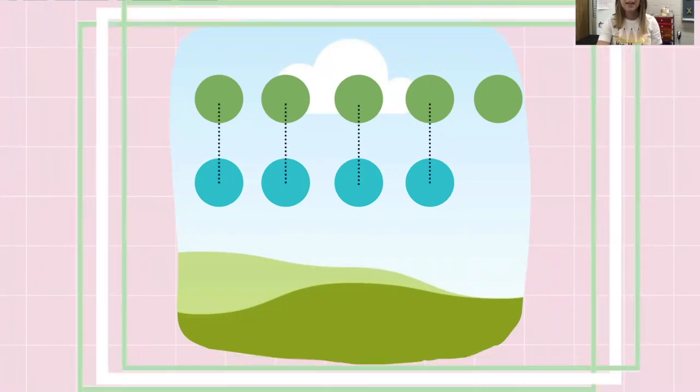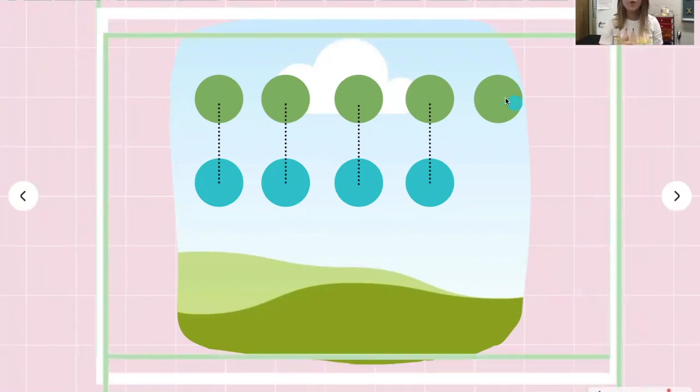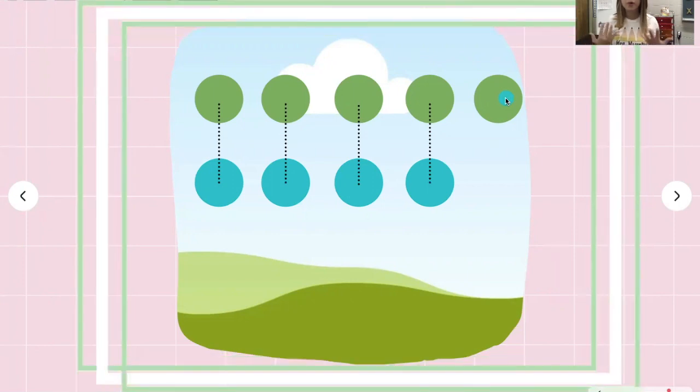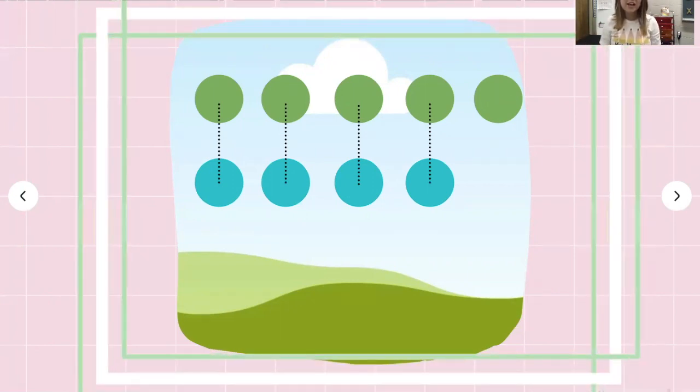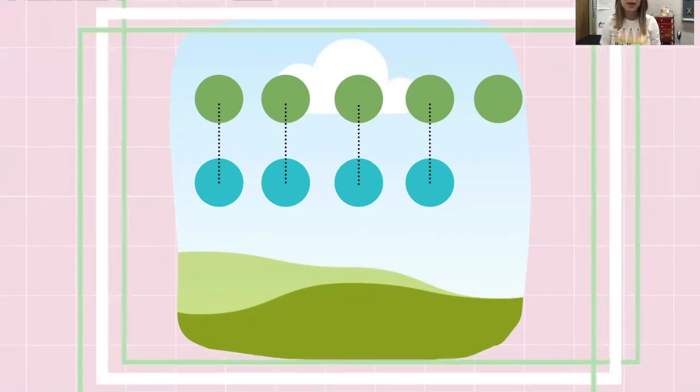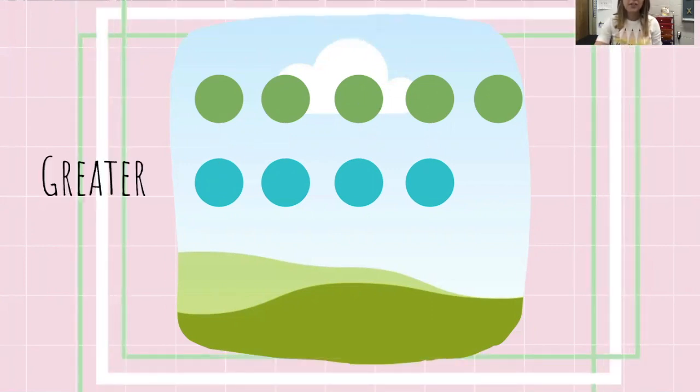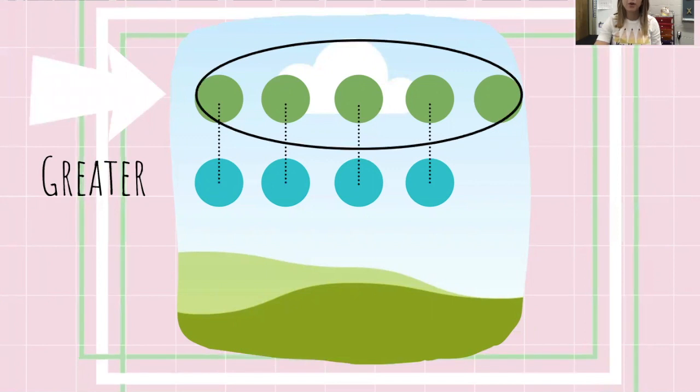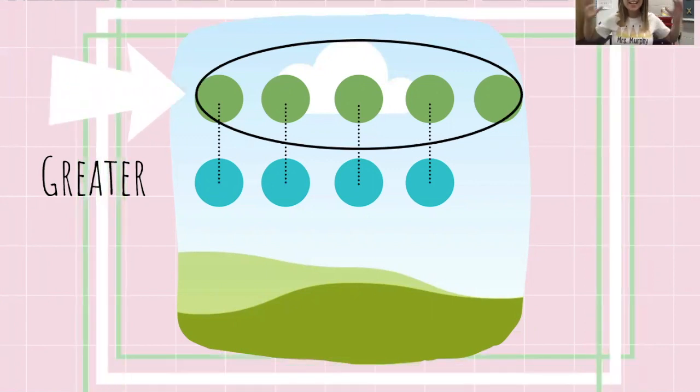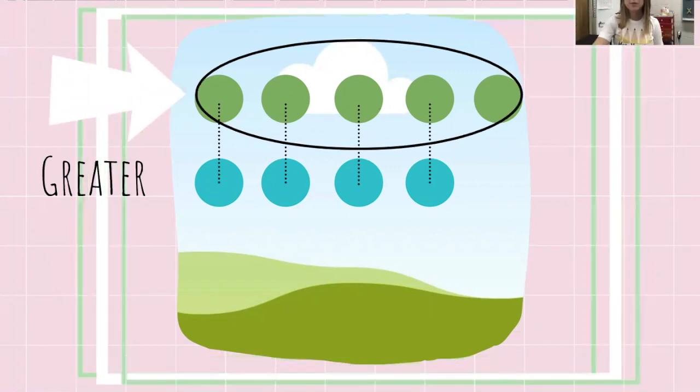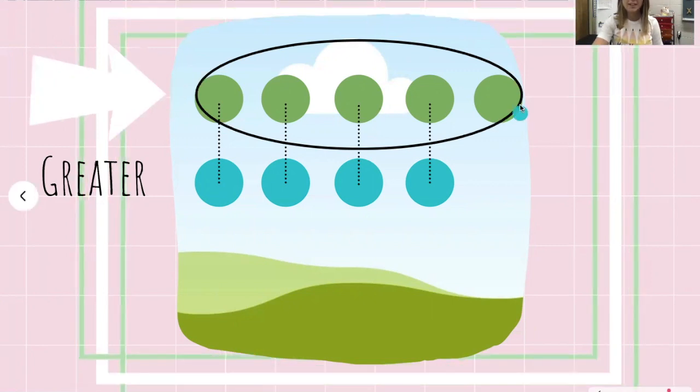Now, can I match this last one here? No, I cannot. There's no more blue. Now it's time for me to decide which one has more. I would decide that the green group has more. That's right, it means it is greater. That's because it has one left over.